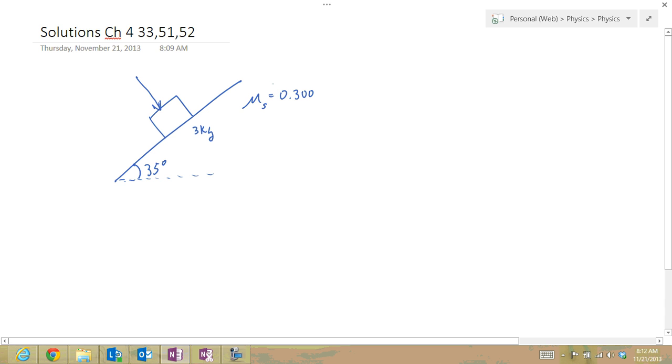This must be the static coefficient of friction if this is a situation where the object is not moving. So I will draw the free body diagram for this system. And I am going to do the free body diagram in our tilted x prime, y prime coordinate system that we've talked about before.